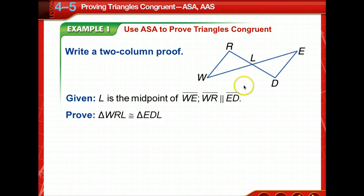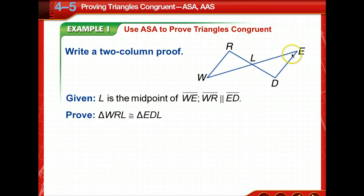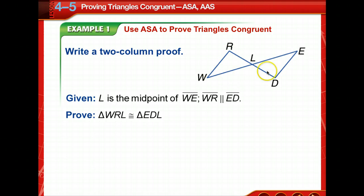You might want to take just a moment and draw this picture because we're going to lose it as we go over this one. They want us to write a two-column proof. We're given that L is the midpoint of WE. So what does that tell us about these two pieces? LW is equal to LE. We're also told that WR is parallel to ED. Remember, when you're told about parallel lines and we see a transversal, we're thinking some kind of angles are going to be congruent.